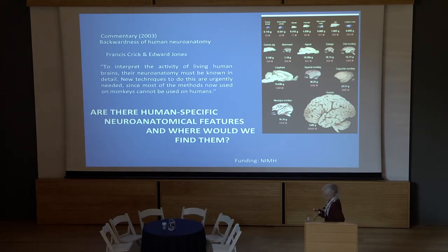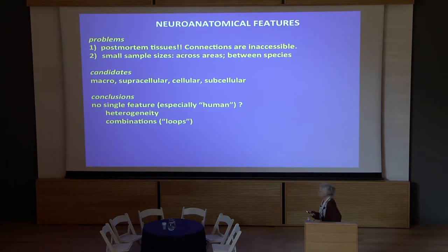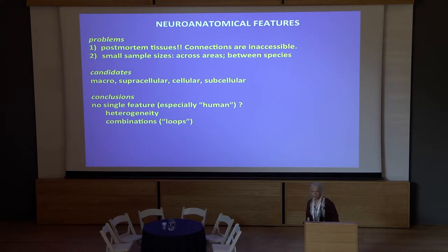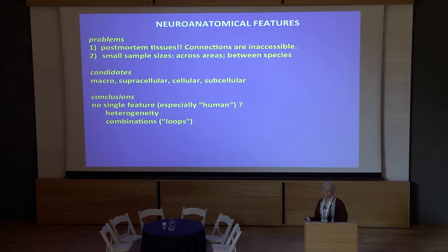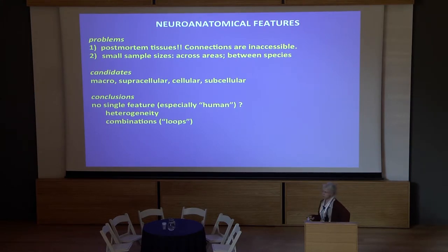The reason for that — there are many, of course, you've already heard — there are problems with getting the tissue, and this talk is going to be mainly neuroanatomy. The problems with human neuroanatomy in particular are accessibility of the tissue. Post-mortem samples have their own problems. We've just heard about the problems of surgical samples. In addition, the sample sizes are very small because the brain is very big.